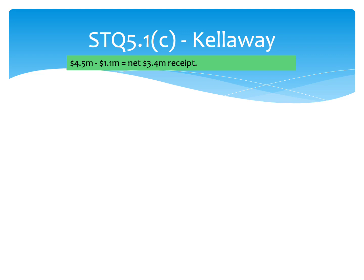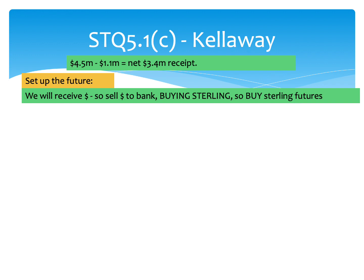This is similar to a question we looked at earlier where on the same day you've got multiple transactions. For Kellaway, we've got a $4.5 million receipt and then on the same day a $1.1 million payment. So what you're actually trying to hedge in September is a net $3.4 million receipt — just that net figure hedged using futures. We need to buy sterling futures today to begin our hedge, and we're going to use September futures because the transaction is in September. There are three different figures for futures; focus on the September one that links to your transaction date.